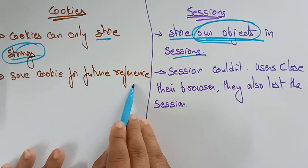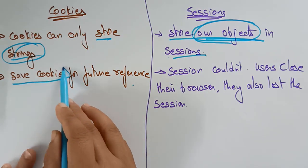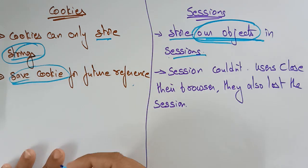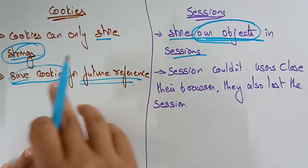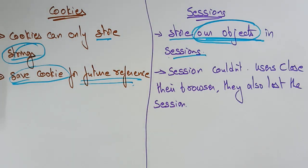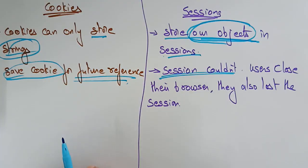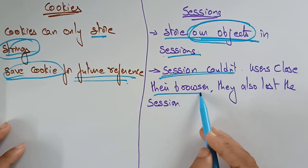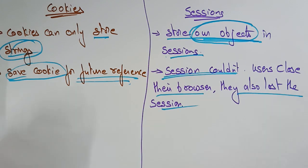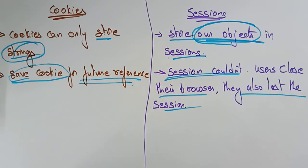We save cookies in the user's browser for further reference. Why? Because going to the server and getting the data every time is very time-consuming. So to avoid that, some cache is stored in the user's browser, and cookies are stored there for further use. But sessions cannot save user data because when the user closes their browser, the session is lost.